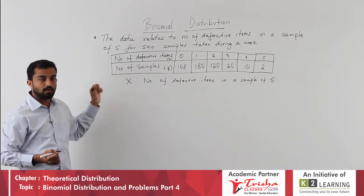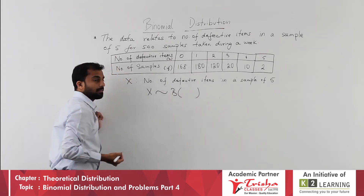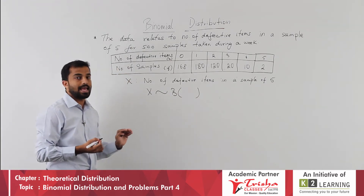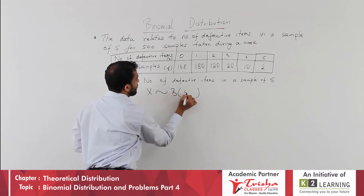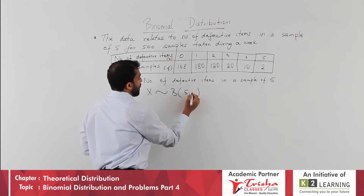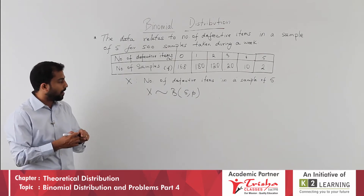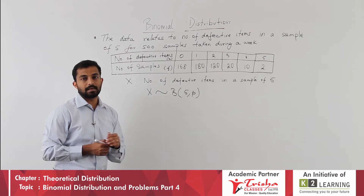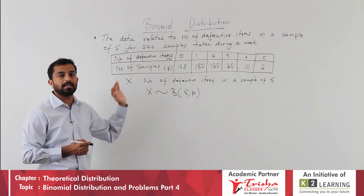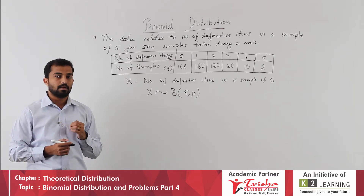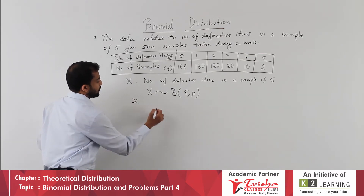This kind of problem follows binomial distribution. The parameters of binomial distribution are n and p. Here n is the sample size, which is 5. We do not know the probability p, which we will find out. So x follows binomial distribution B(5, p). When x and f are given, the first step is to write the data as x and f columns.